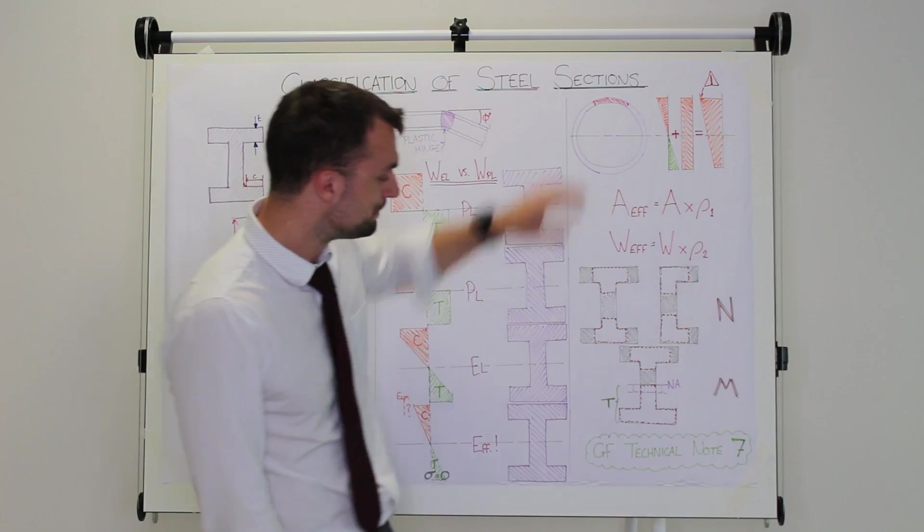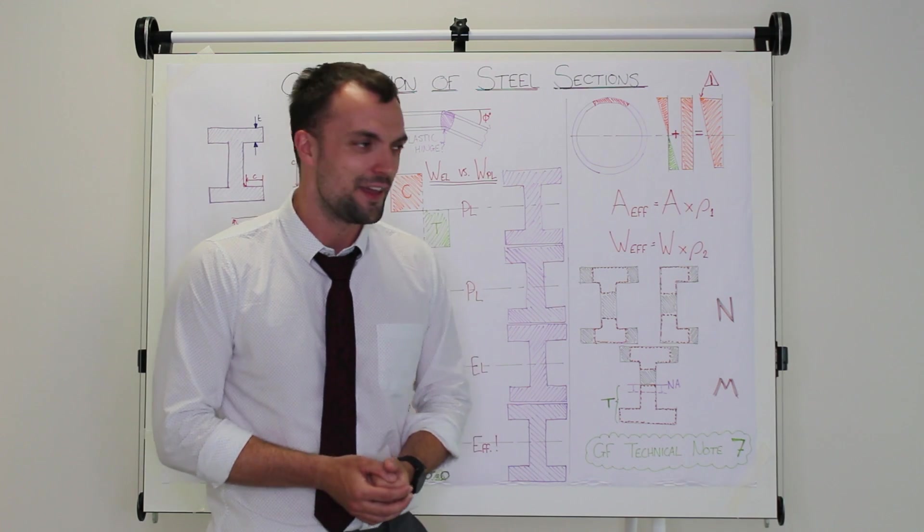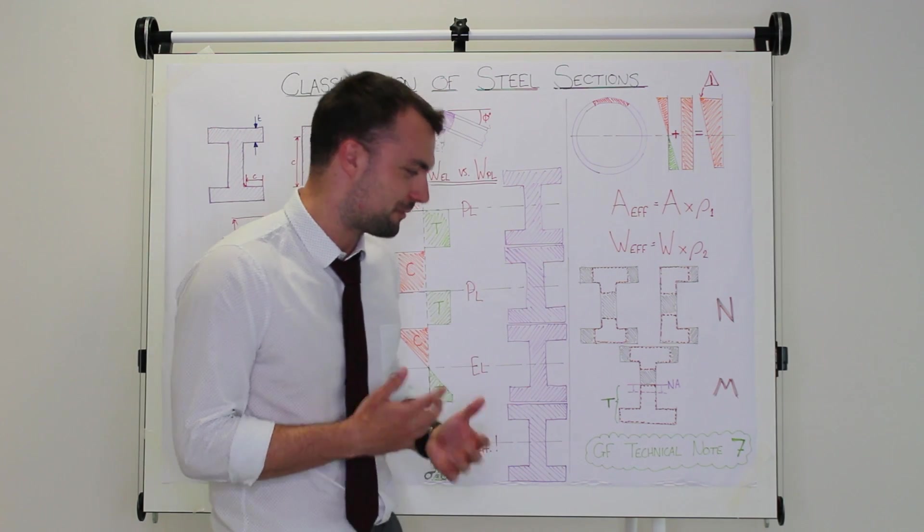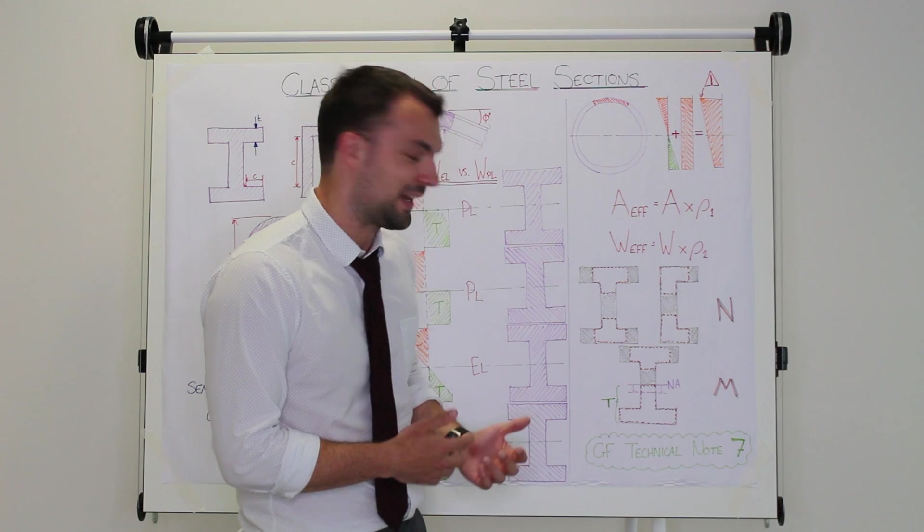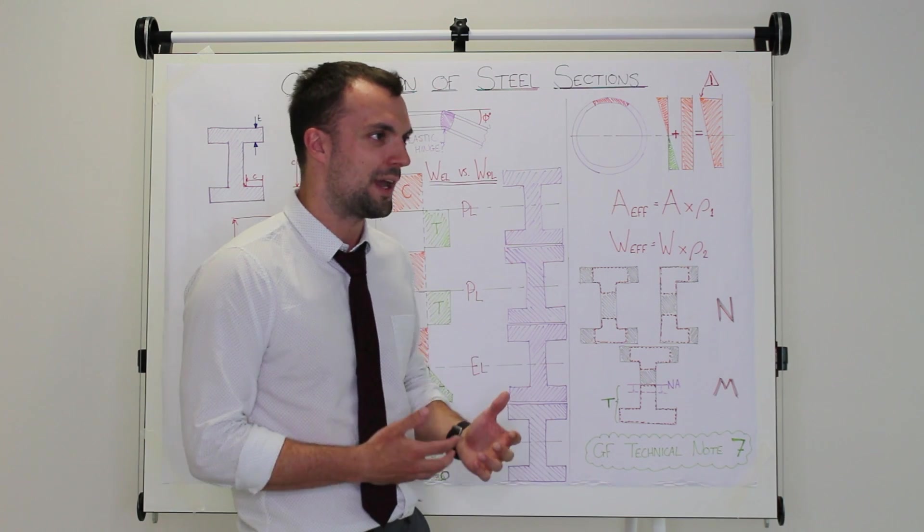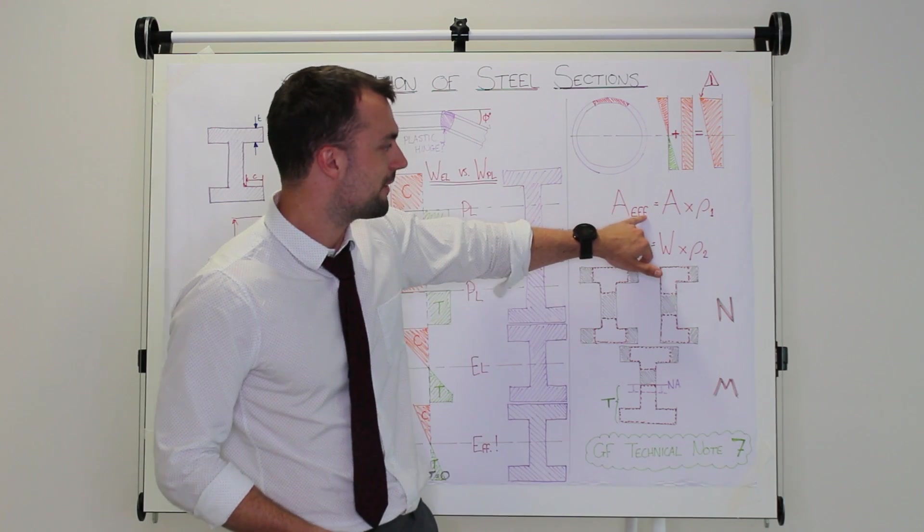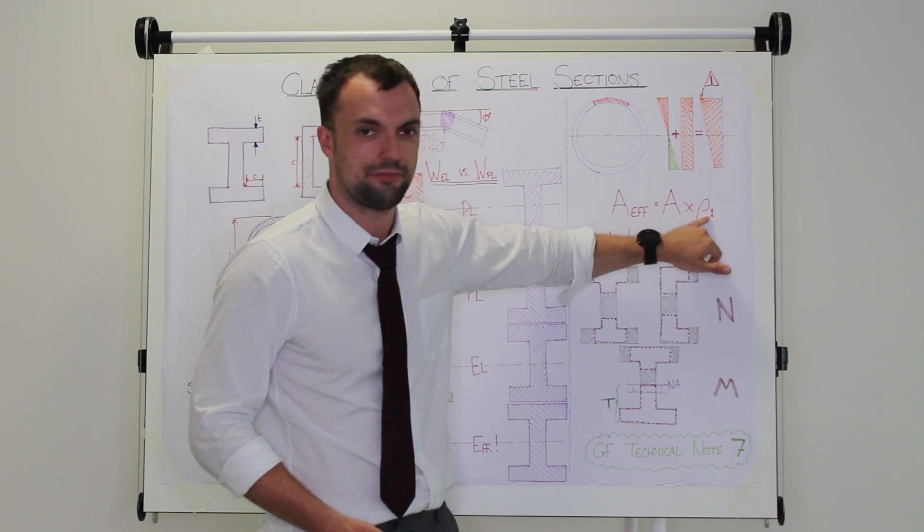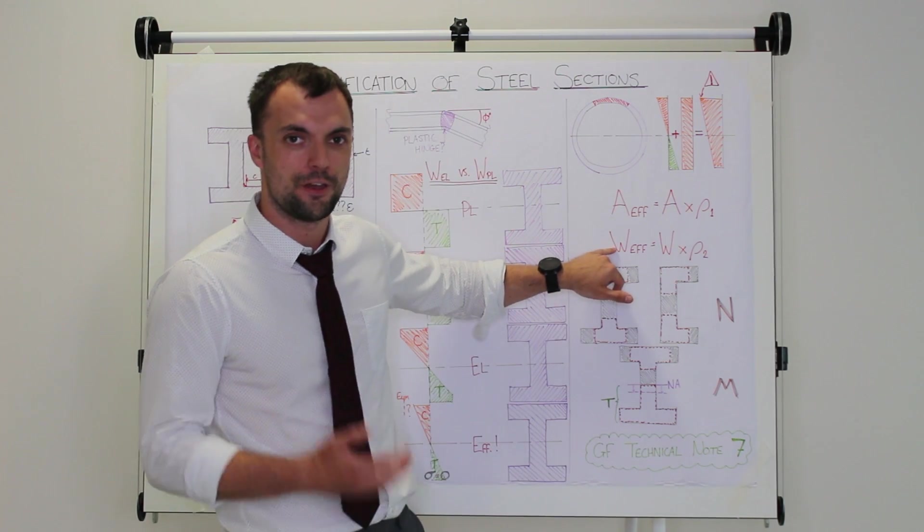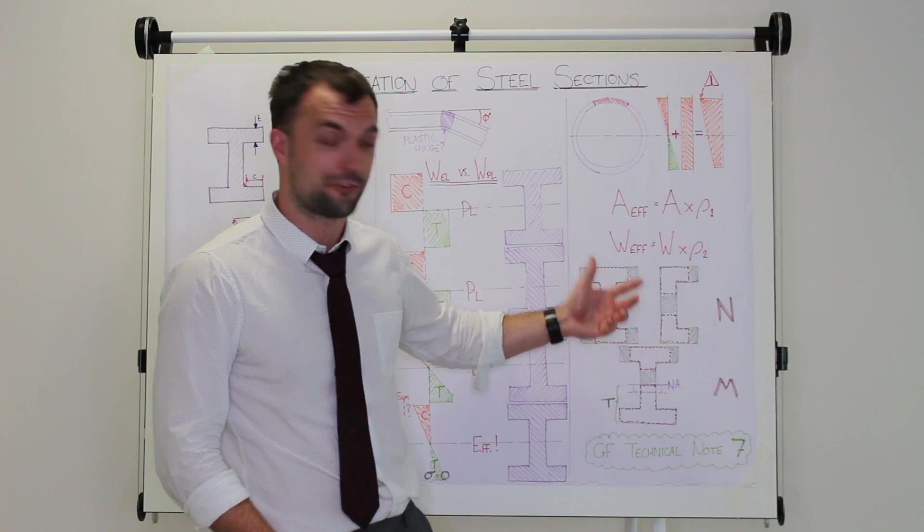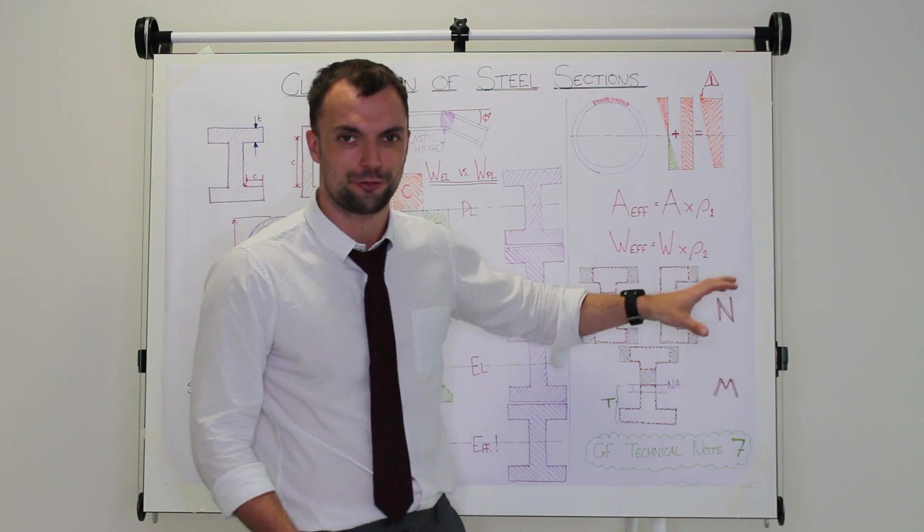Now I've got a little note down here telling you to go have a look at Ground Forces Technical Note 7. It's a great little document explaining our ideas behind the class 4 circular hollow section. It comes from a little bit of research from somebody else about elliptical hollow sections and explains why we treat our sections the way that we do. An effective area, generally speaking, is an area times by a reduction factor, and this explains what reduction factor we use and where we get that from. Same with your effective section modulus for bending—it's the section modulus, usually an elastic section modulus, multiplied by a different reduction factor.